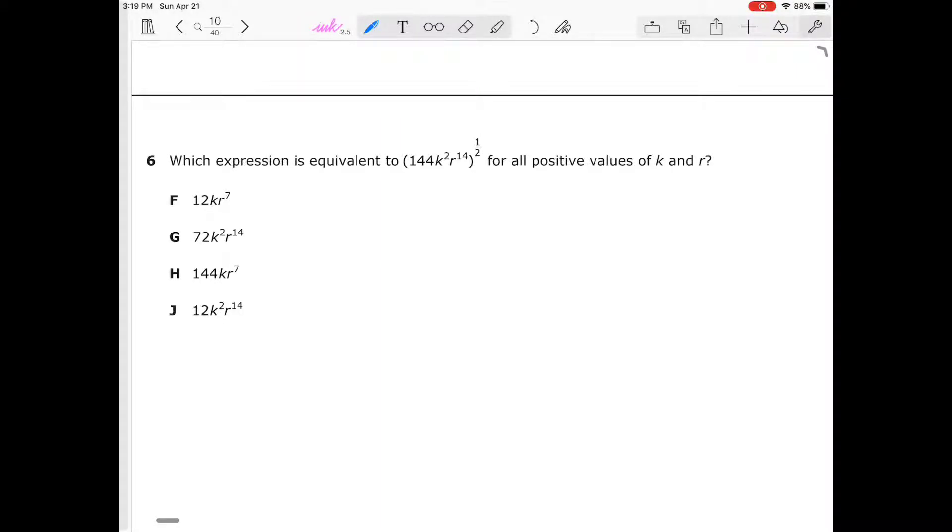Number six: which expression is equivalent to (144k²r^14)^(1/2) for all positive values of k and r? This is related to the power rule. This is 144 to the power of 1/2, this is k² times 1/2, and this is r^14 times 1/2. Since this is a power's rule, that means we're multiplying everything. 144, this 1/2 is the same thing as saying the square root of 144. The square root of 144 is 12. So that eliminates G and that eliminates H.